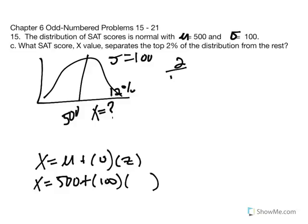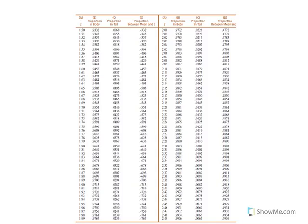We use the tail to find the Z value with 2% to the right of the mean. Looking for a proportion of 0.0200 in the tail, the closest value we find is 0.0202, which corresponds to a Z score of 2.05.